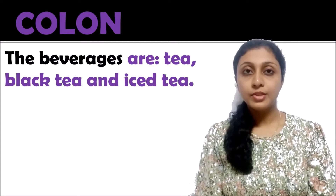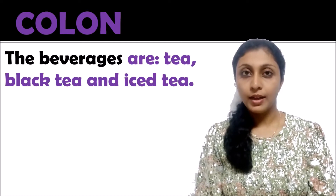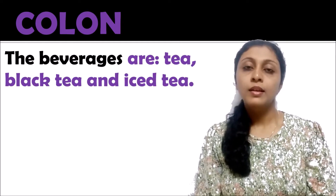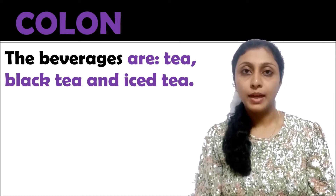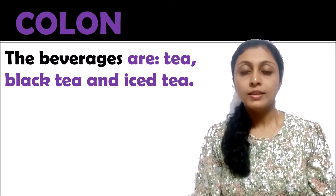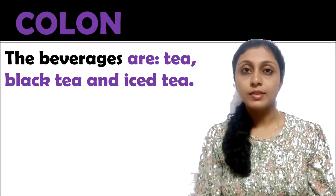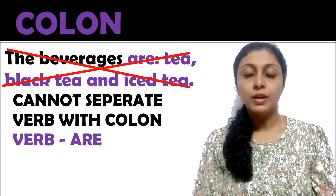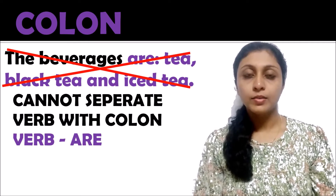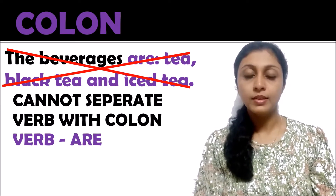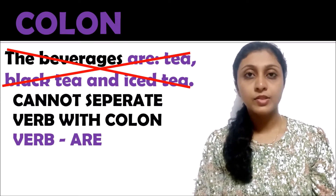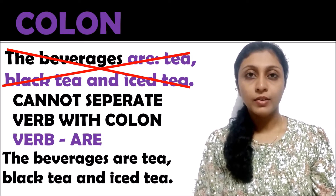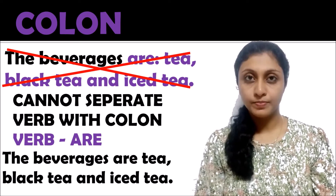If the sentence was 'the beverages are:' and then tea, black tea, and iced tea — this sentence is wrong. You cannot separate the verb 'are' with a colon. Instead, you could just write 'the beverages are tea, black tea, and iced tea' without the colon.